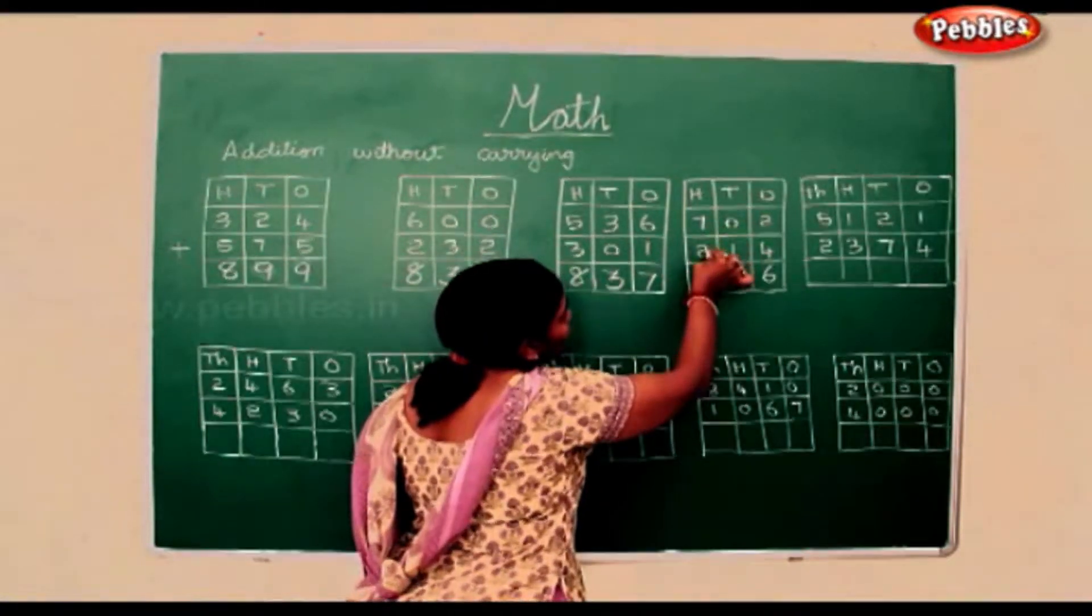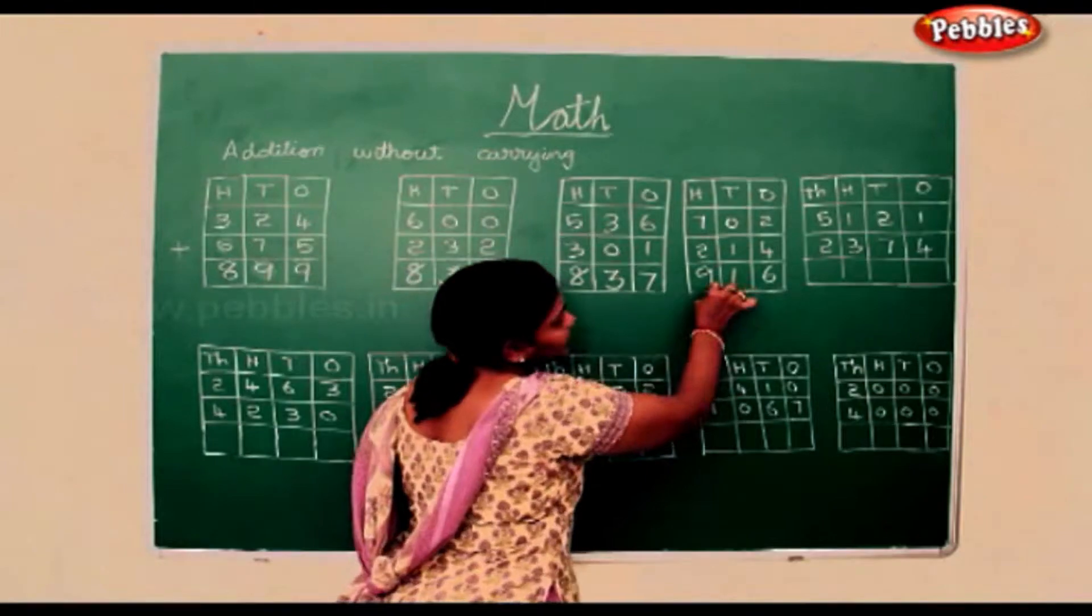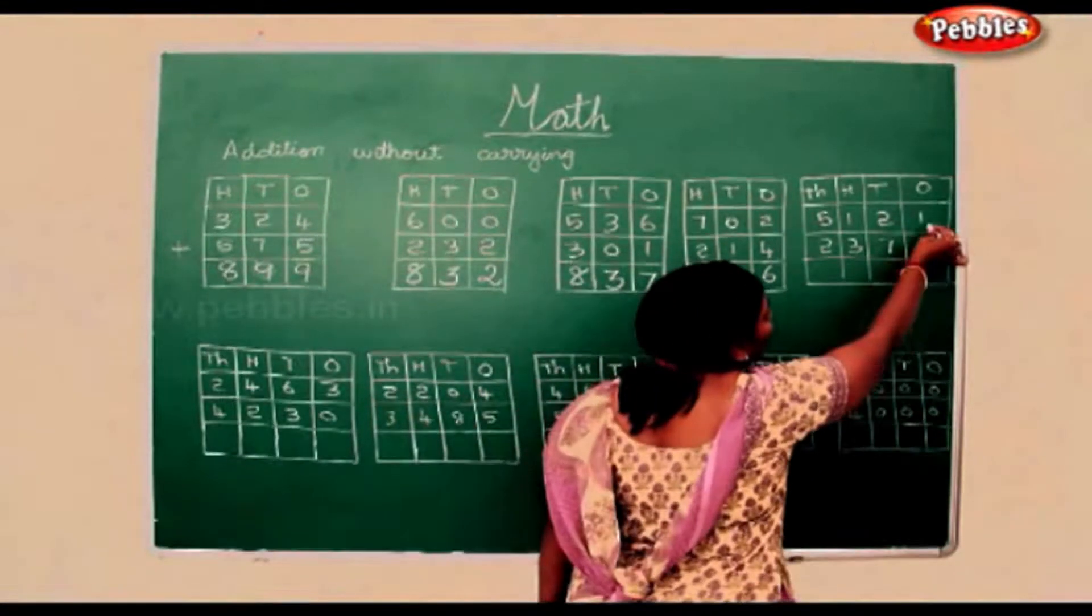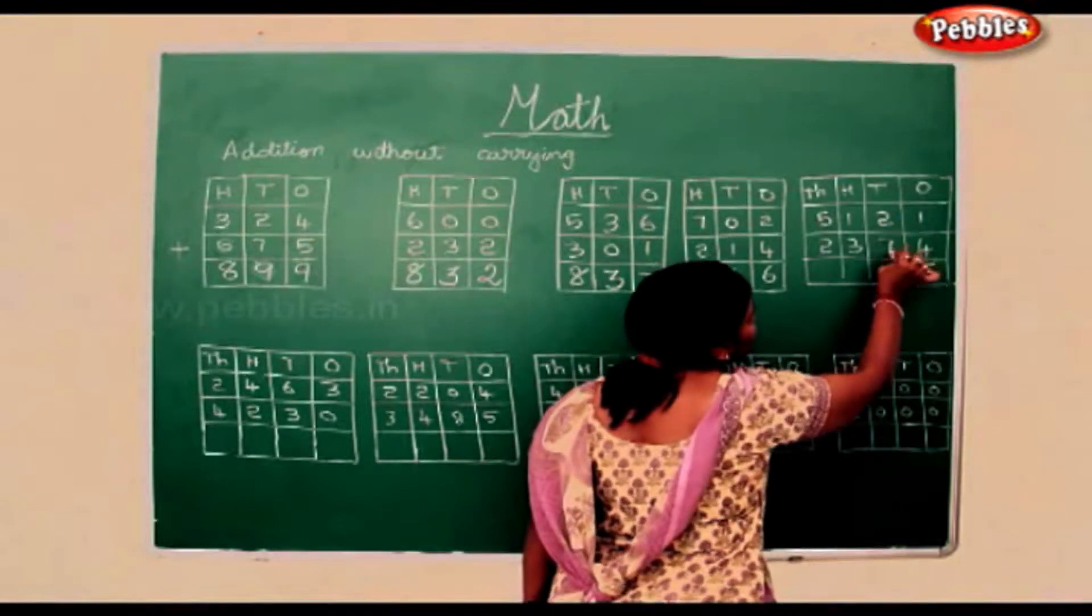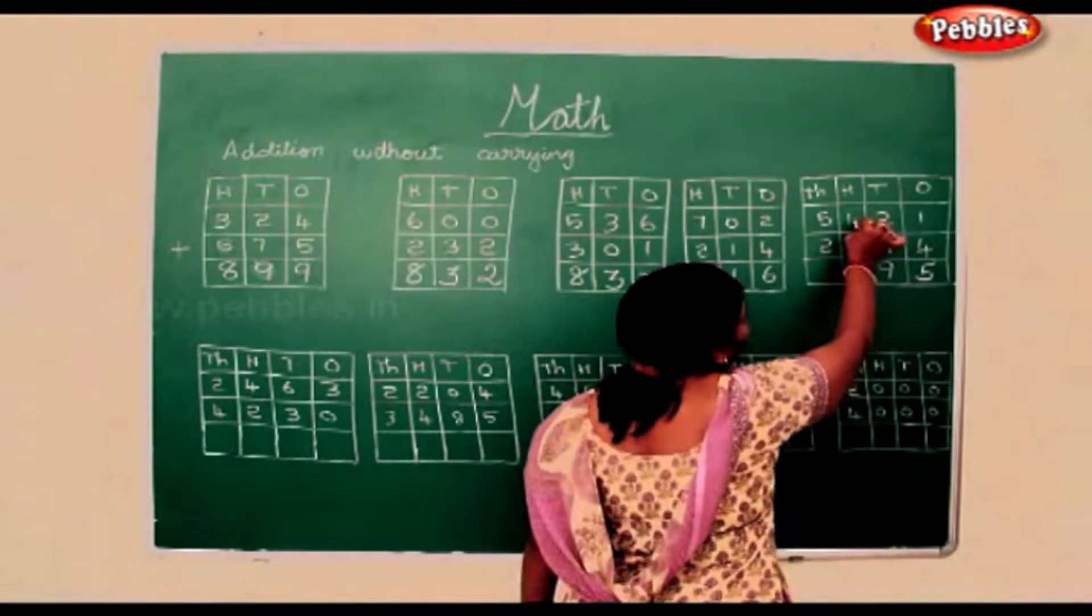7 add 2 is 9. Here 1 add 4 is 5, 2 add 7 is 9, 1 add 3 is 4.